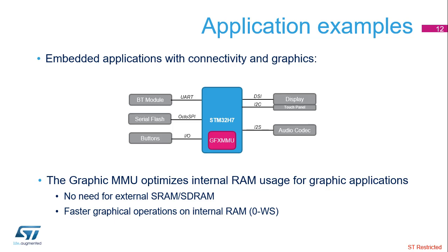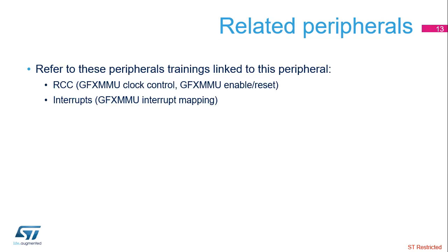Wearable applications require low power management functions together with a high-quality user interface. In this context, the Chrome GRC optimizes internal RAM usage and it is no longer necessary to add an external component for SRAM or SD-RAM. The graphical content creation is much faster thanks to the internal zero-wait-state RAM. You can refer to peripheral training slides related to RCC and interrupts.